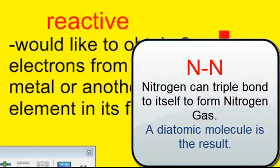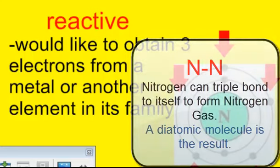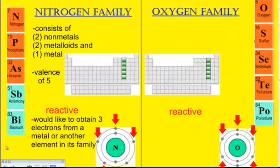When that happens, you get a diatomic molecule, and di means two, two atoms that bond together that are of the same element. In this case, you're going to get a triple bond with nitrogen bonding to itself.